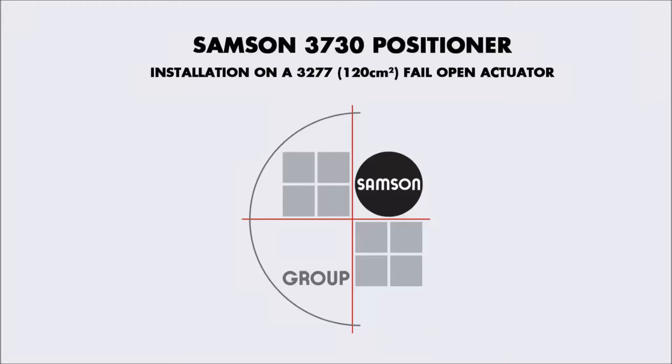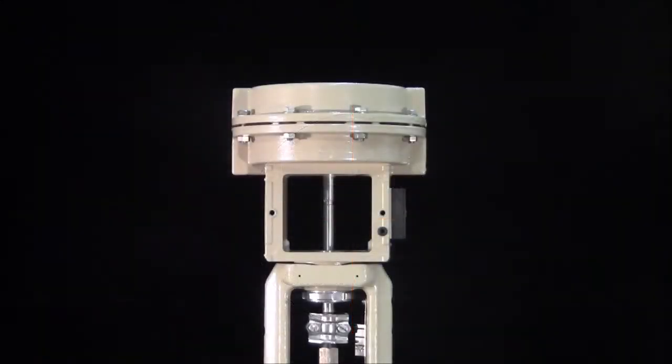In this how-to video, we'll install a Samson 3730 positioner to a 3277 size 120 fail-open actuator. Detailed step-by-step instructions can also be found by following the link in the video description below.